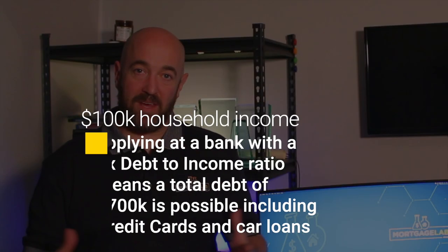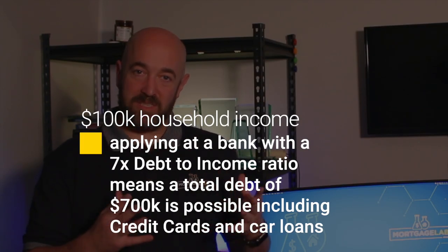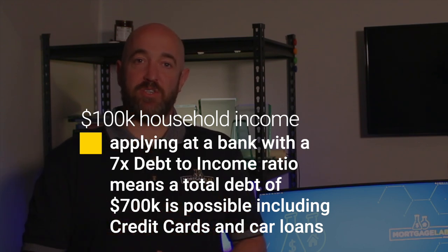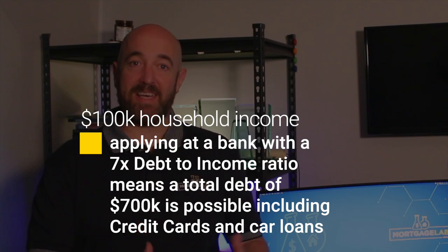Debt-to-income ratios limit lending to a certain multiple of the applicant's income, usually from six to seven times. In other words, a household with $100,000 of household income, applying at a bank with a seven times debt-to-income ratio could only ever borrow $700,000, including credit card debt and car loans.